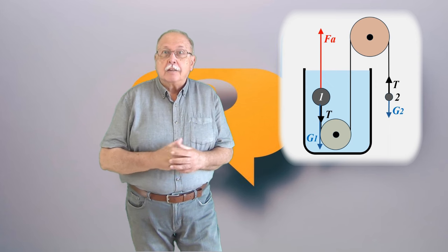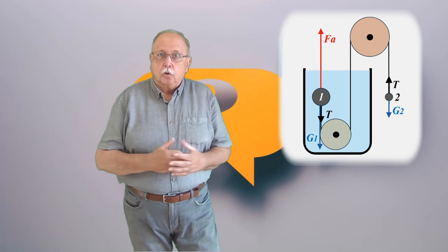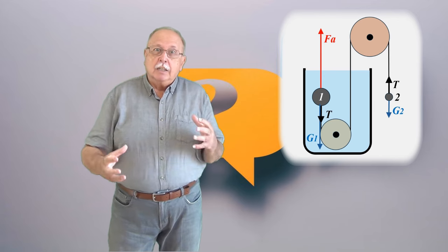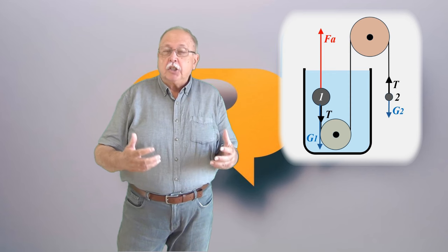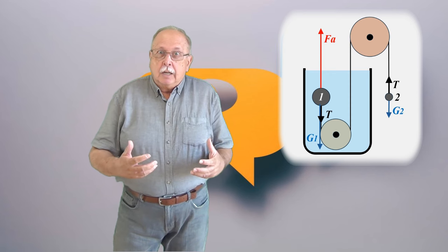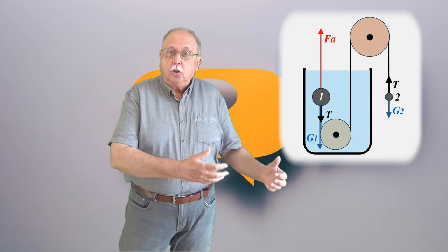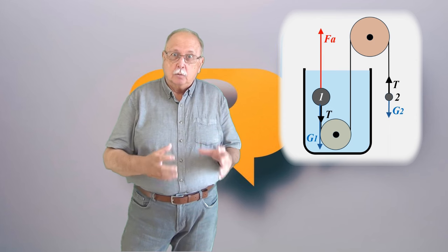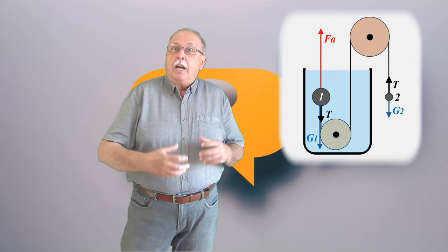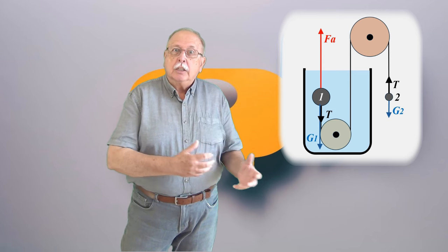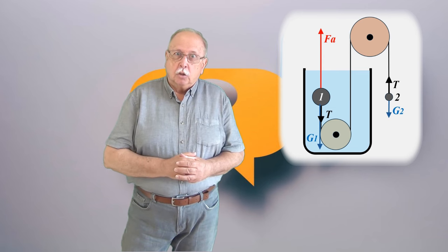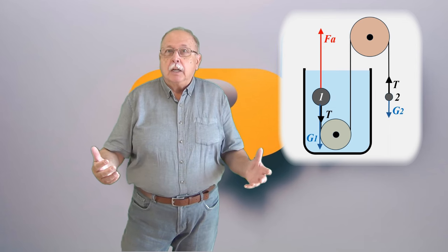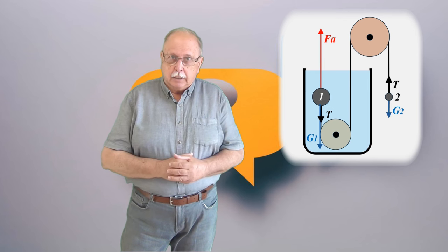Deoarece amândouă forțele sunt proporționale cu volumul. Și asta mai înseamnă că și diferența dintre forța arhimedică și greutatea bilei 1 crește de 8 ori, dar tot de 8 ori crește și greutatea bilei 2. În concluzie, diferența dintre forța arhimedică și greutatea bilei 1 este și acum egală cu greutatea bilei 2. Deci avem echilibru în continuare. Așa că dacă dublăm diametrele bilelor, bilele rămân în echilibru.